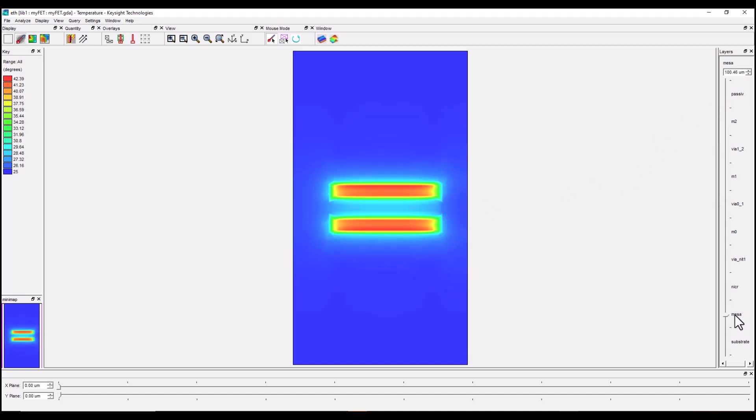Once you come back to the main layer like in this case mesa that's where most of the FET power dissipation is happening you can see the hot zone. Now if you want to read out the temperature at a specific point you can simply right click. Once you do a right click it puts a marker and on the lower left hand side you can read the temperature. For example if I click here you can read the temperature is 26 degree and right in the center you have 40.98 degrees centigrade.